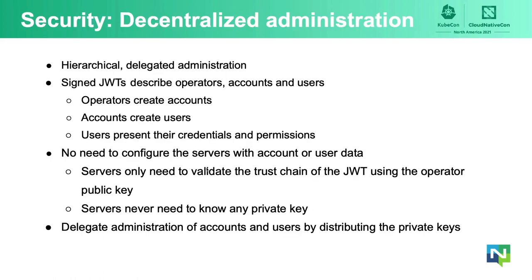Let's start with security. The security in NATS is hierarchical and allows for delegated administration. NATS uses signed JSON web tokens to describe operators, accounts, and users. Operators create accounts; accounts create users. Users present their credentials and permissions in the form of signed JWTs, such that there is no need to configure servers with account or user data. The servers only need to know about operators and use the operator public key to validate the trust chain of the JWT.